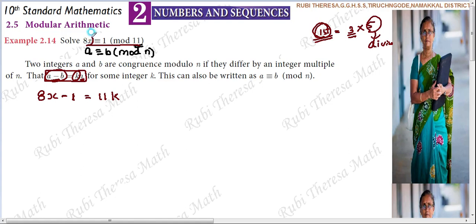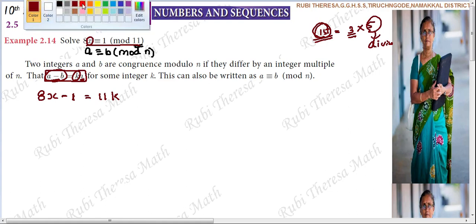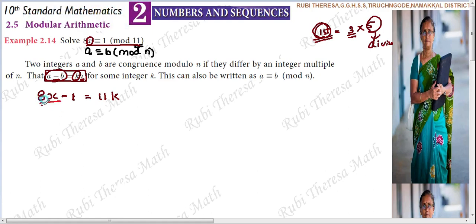What we have to solve for is x. We have to find the value of x such that when you substitute x, this dividend will be divisible by 11, leaving a remainder of 1.